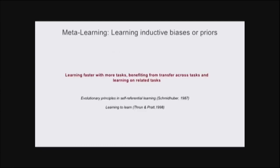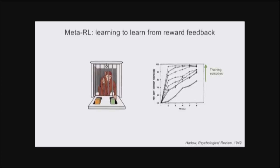This is a general principle of meta-learning: learning that learns faster with more tasks, benefiting from transfer on related tasks. Essentially, we're learning an inductive bias or a prior. These ideas have been around for a while, discussed by Schmidhuber, Thrun and Pratt over two decades ago.